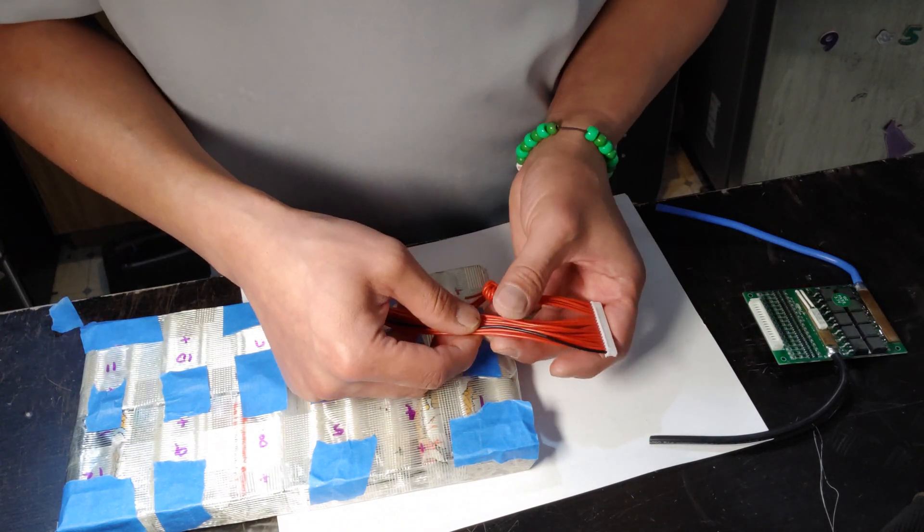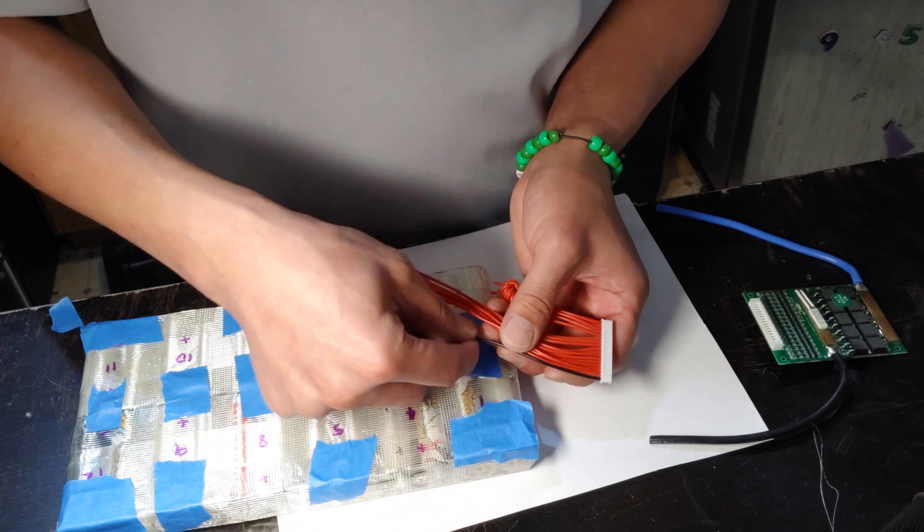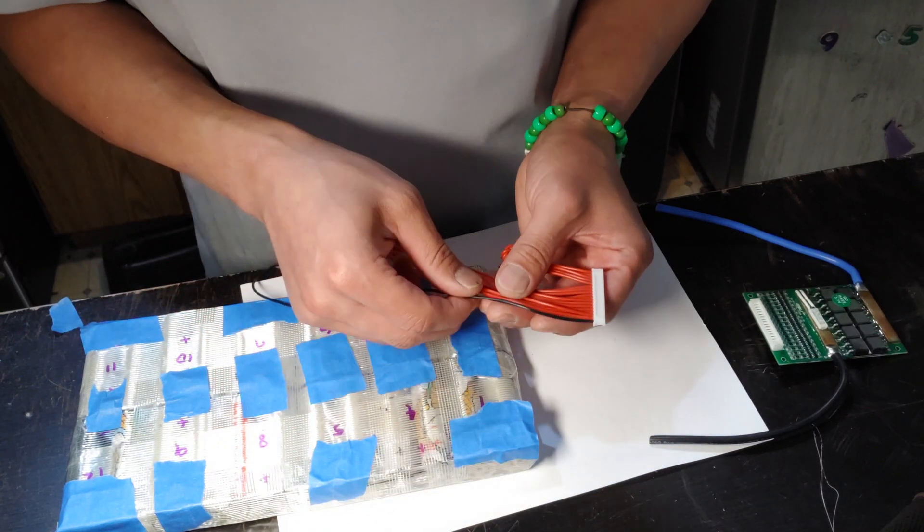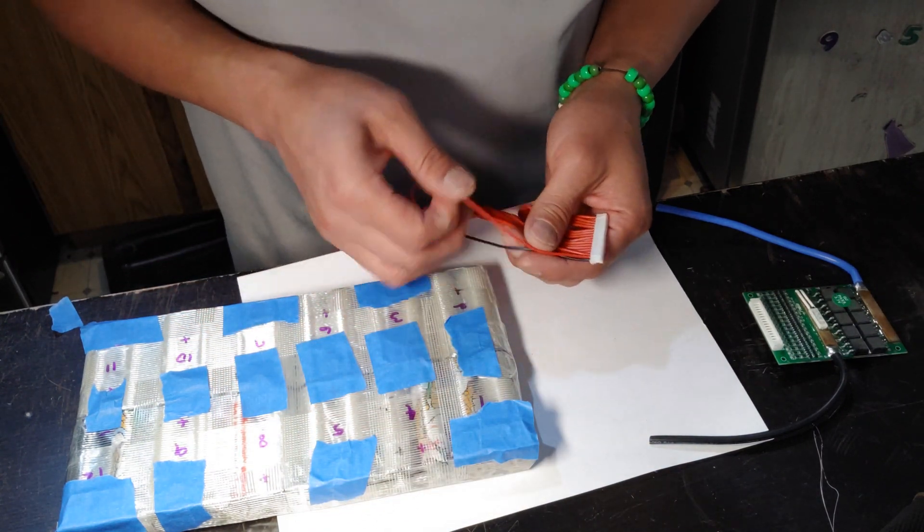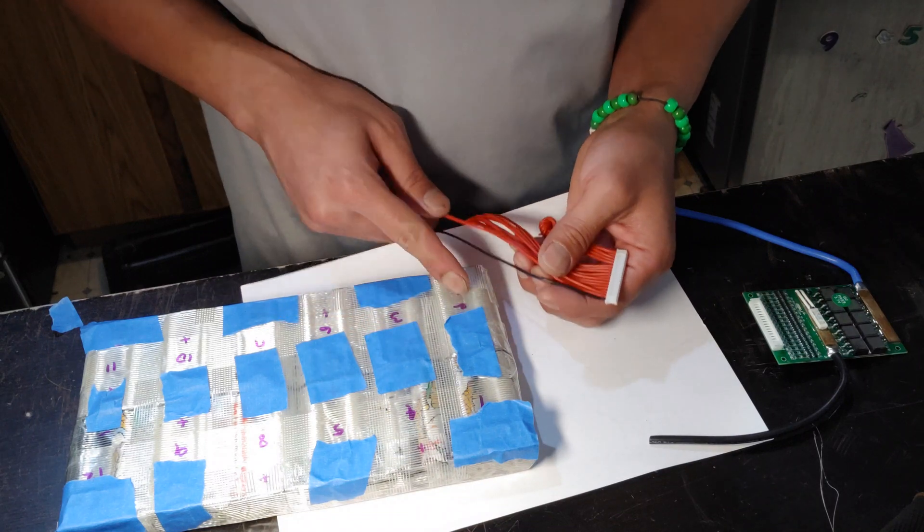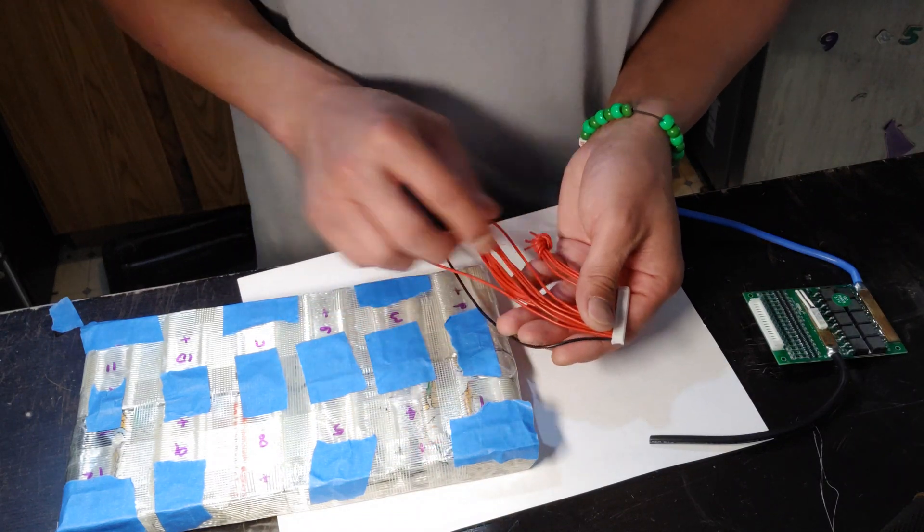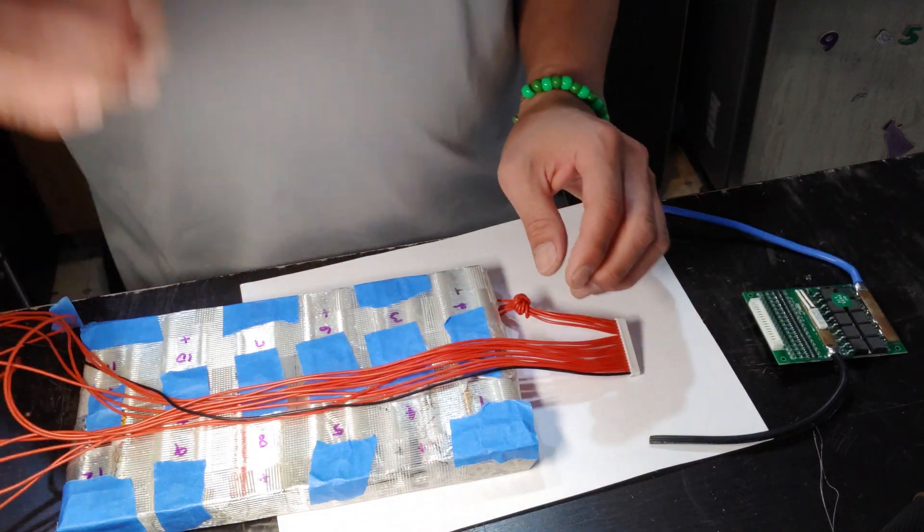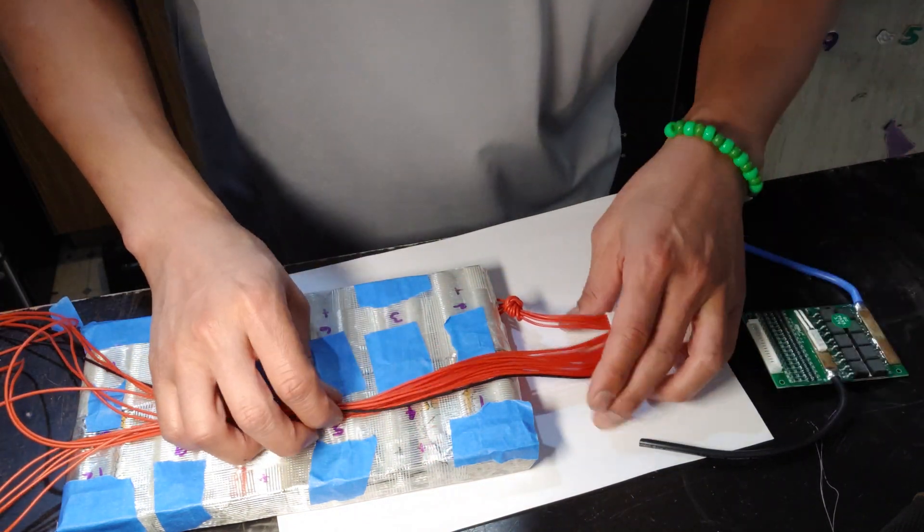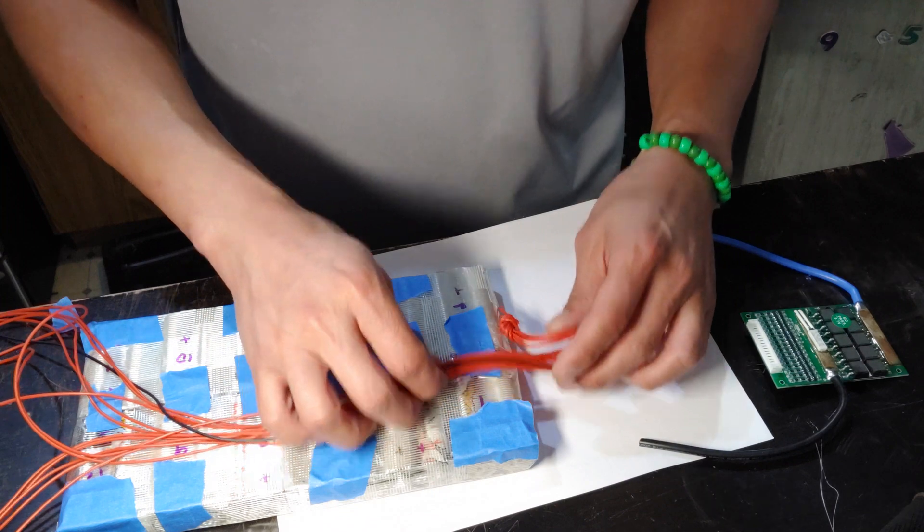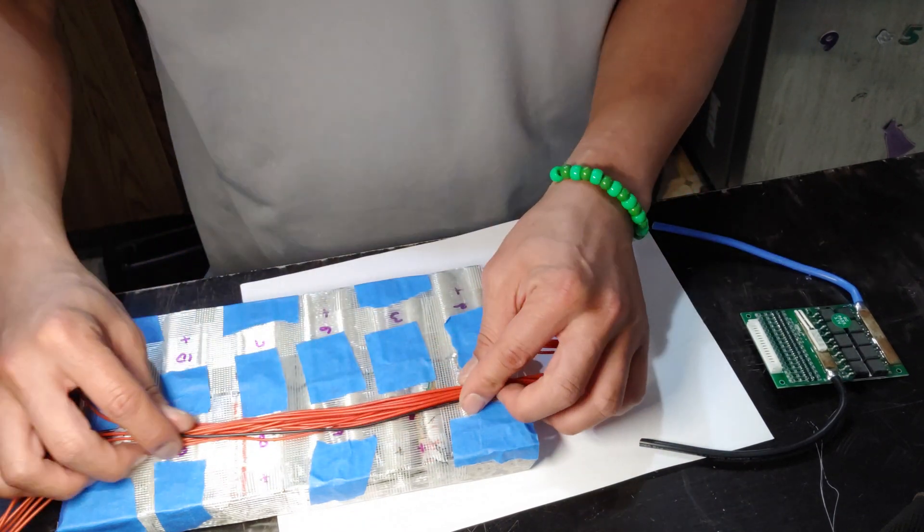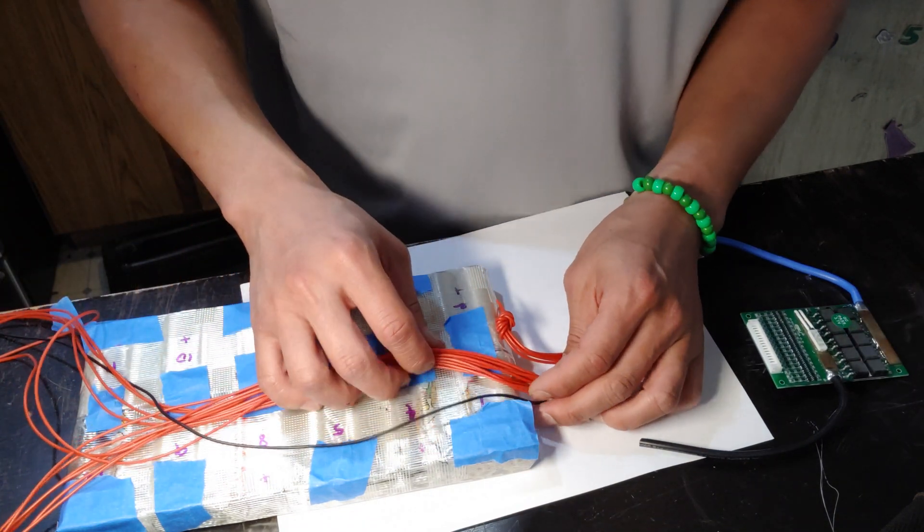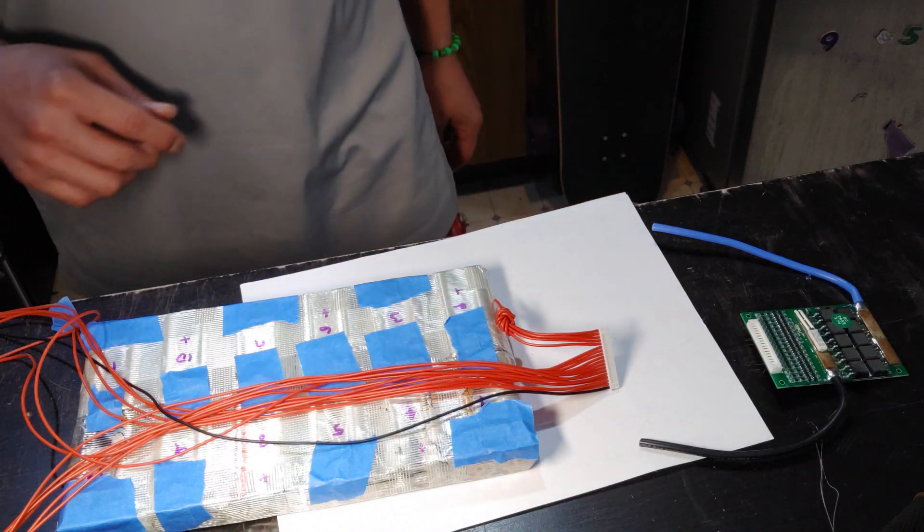So I'm going to connect the B minus here, and then plus 1 is going to be here, plus 2 is going to be here, plus 3 and so on, until I connect all of them. So I'm going to actually put it on this side so the wires go real clean like this.